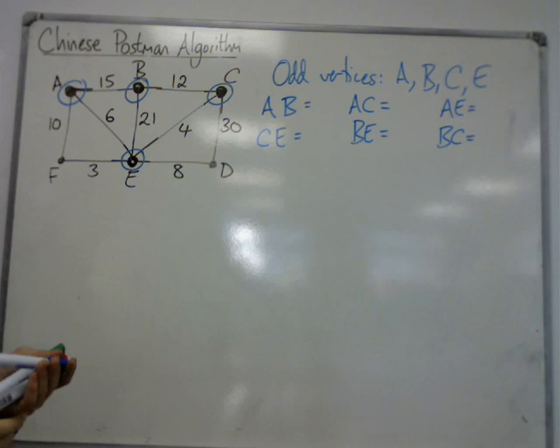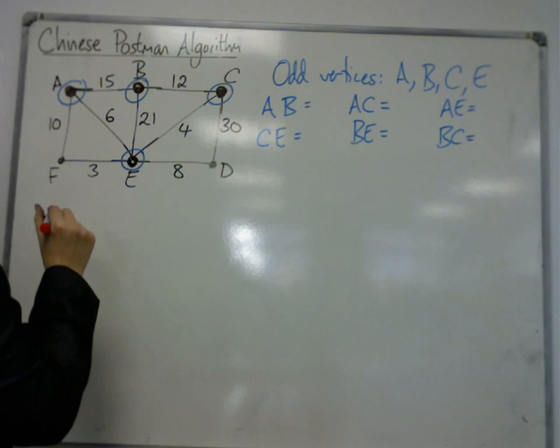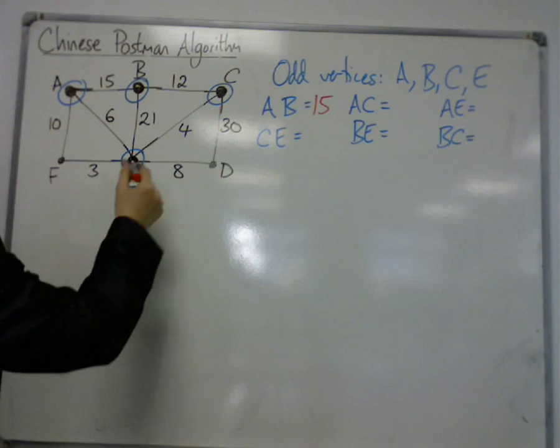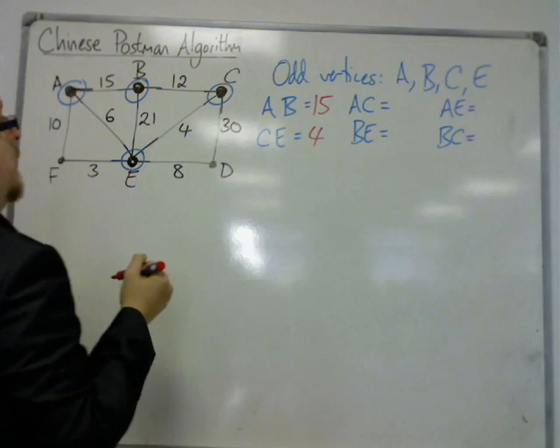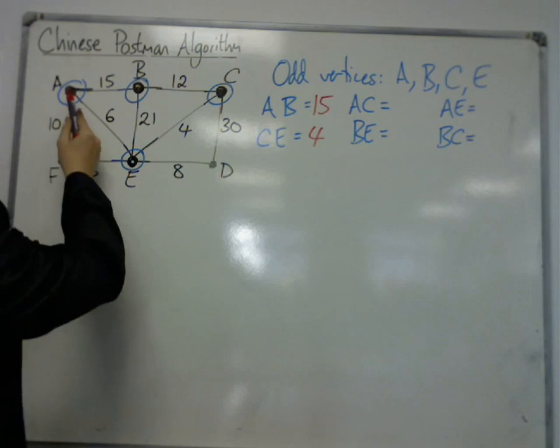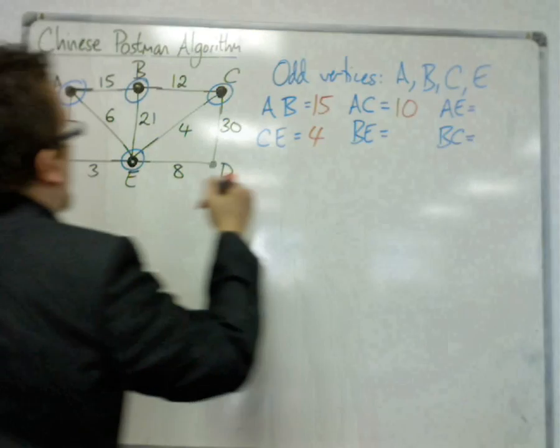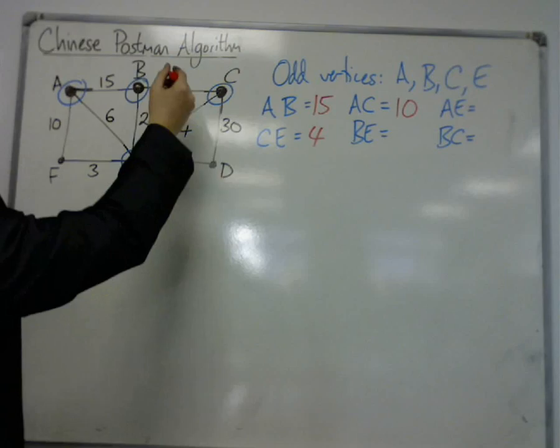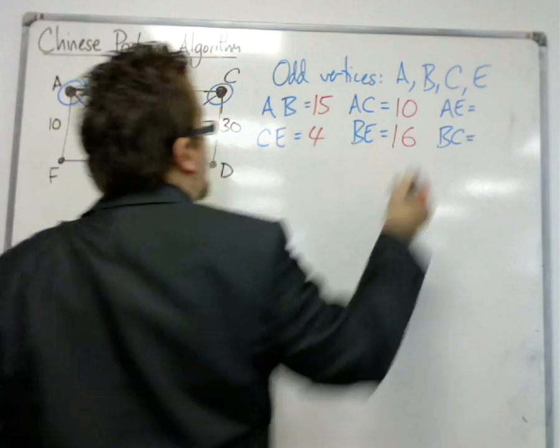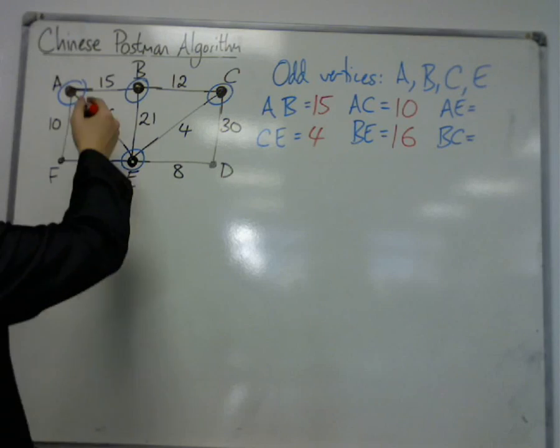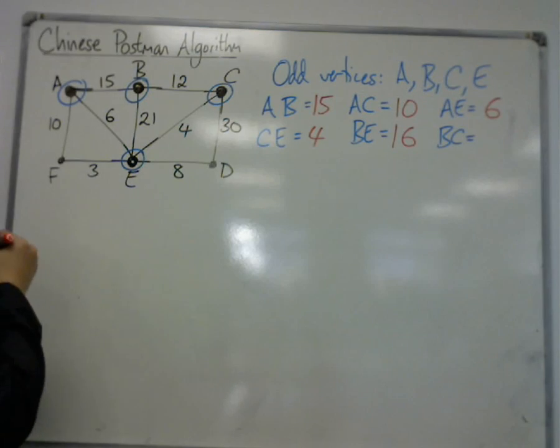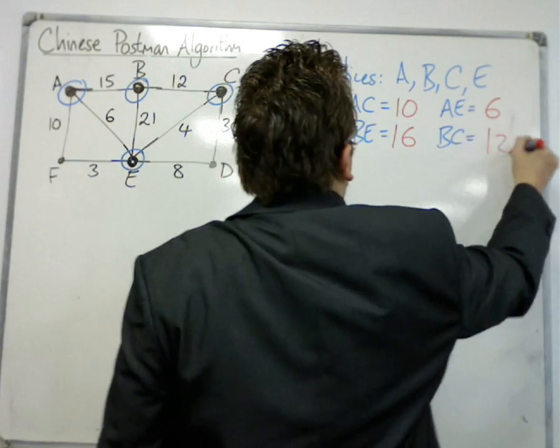So, we're looking for the shortest distance between A and B, which in this case is going to be 15. From C to E, we've got 4. From A to C, we've got 10. And from B to E, well, that's 21, that's 21, and that's 16. We've got A to E will be 6. And B to C will be 12.